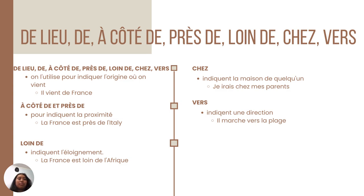They came from Paris, they came from Mexico. And DE also indicates proximity — France is close to Italy, the United States is close to Mexico. And it is far away from Mexico.